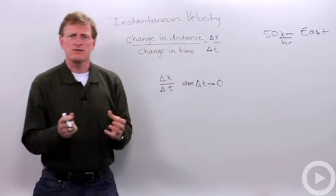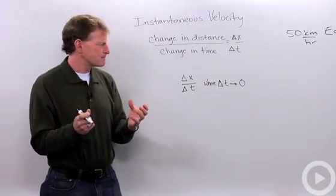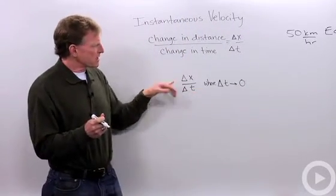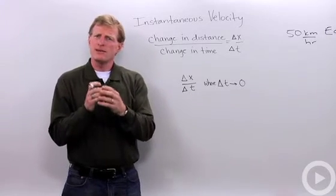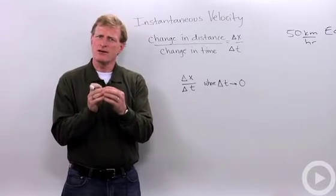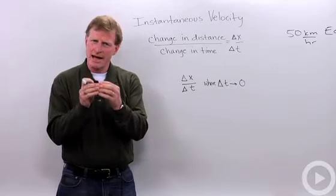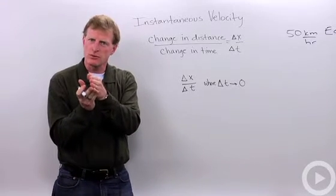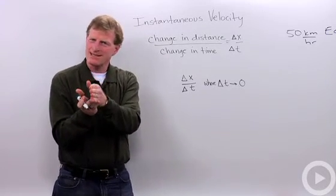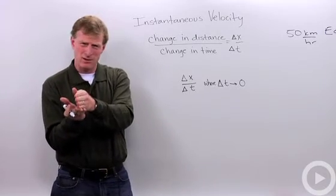Why is instantaneous velocity so difficult to calculate? It's the change in distance over the change in time. But we want that time to be as short an interval as possible. It's like a snapshot of what your speed was at that one particular second, half second, thousandth of a second.